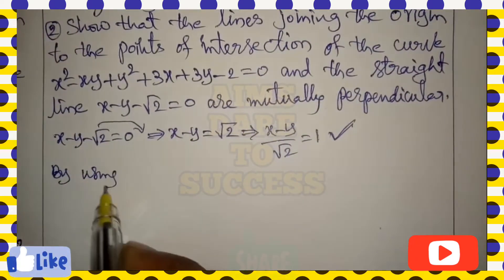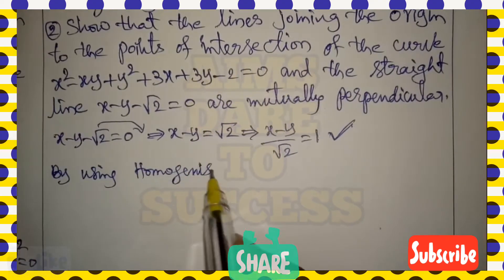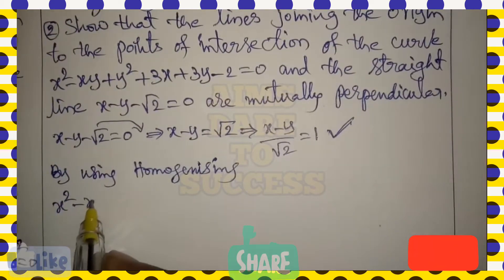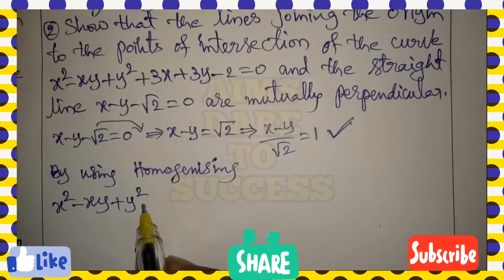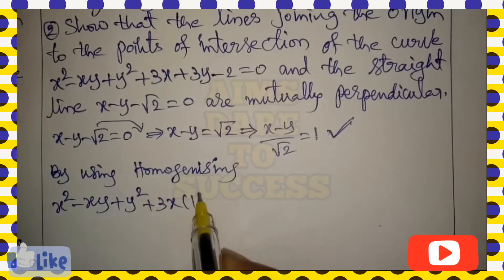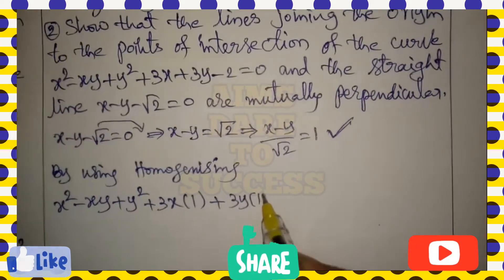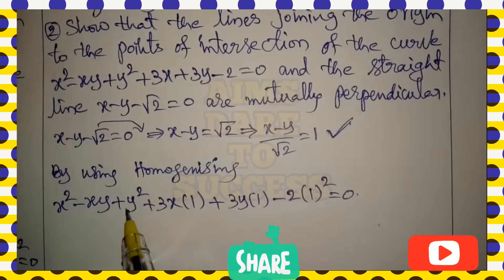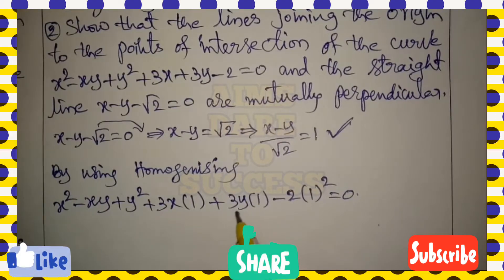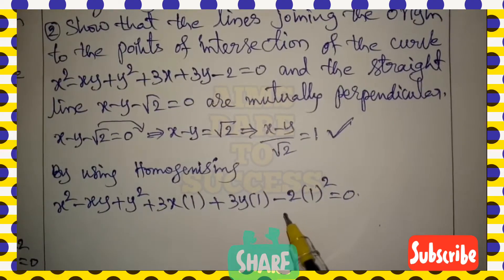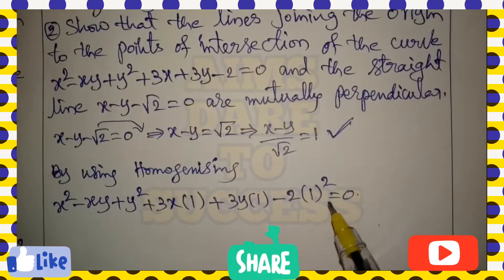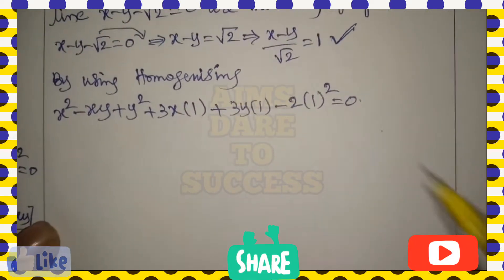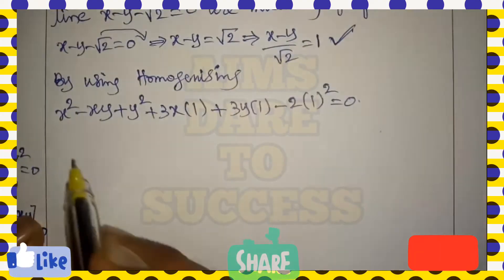Homogenizing means: x² stays as is, xy stays as is, y² stays as is — don't disturb those terms. Then the x term is multiplied by 1, the y term is multiplied by 1, and the constant is multiplied by 1, all whole squared, equals 0. Here, '1' refers to the value (x - y)/√2 from the straight line.